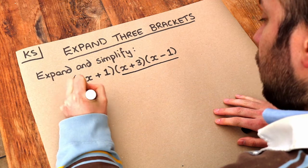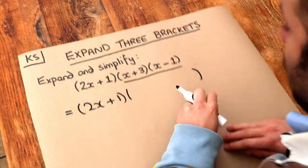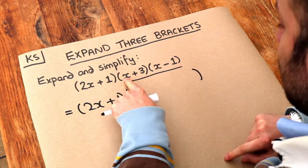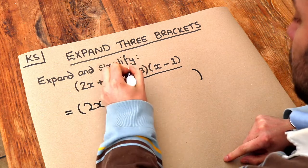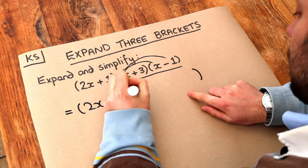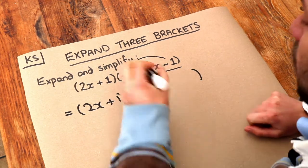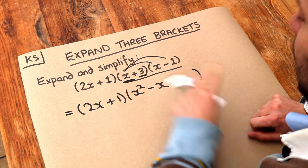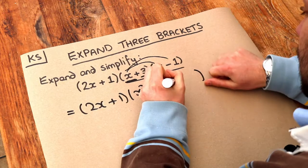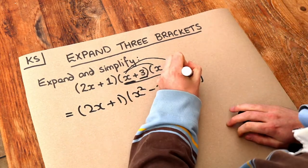So if we do that, let's put a big fat bracket here. We're going to do each thing in the first bracket multiplied by each thing in the second. So we've got x times x, which is x squared. We've got x times minus 1, which is minus x. Then the 3 times x, which is plus 3x. And the 3 times minus 1, which is minus 3.